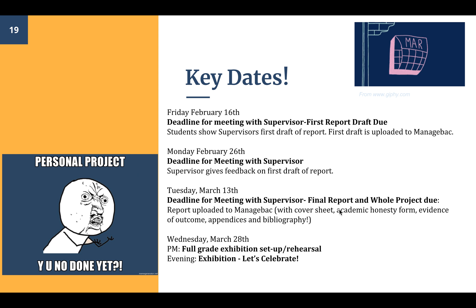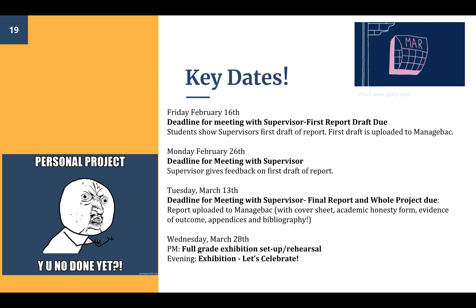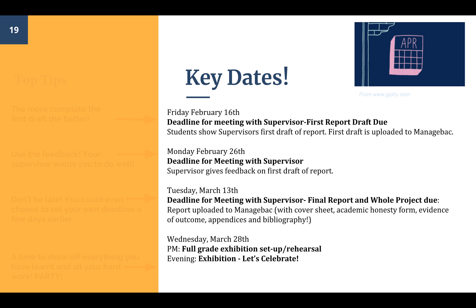Key dates coming up: your deadline for meeting with your supervisor and handing in your first draft report is February 16th. You'll meet with your supervisor again on the 26th and they'll give you feedback on the report. Tuesday the 13th of March is when your final report is due. You must get your supervisor to sign off on the academic honesty form then, so aim to hand it in before that date so they can read it first. Our exhibition is on March 28th.